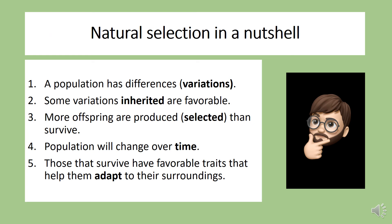To summarize natural selection: a population has differences, also known as variations. Some of those inherited variations are favorable. More offspring are always produced — also known as selected — than survive. Populations will always change over time. And those that survive have favorable traits that help them adapt to their surroundings.